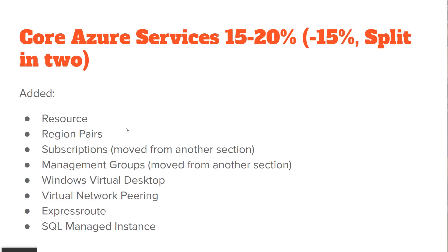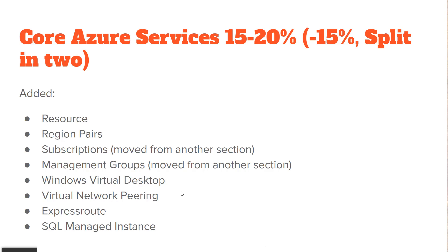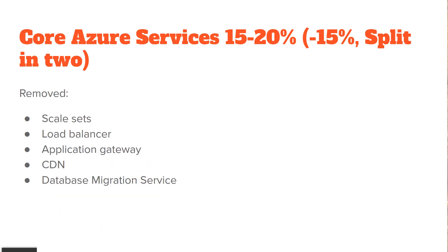For the second section, called core Azure services, it's actually been split into two. It used to be worth 30 to 35% of the exam score. Now it's broken into two sections. The first section is half of it — 15 to 20%. They're talking about the definition of an Azure resource, region pairs, subscriptions and management groups (which was moved up from another section), Windows Virtual Desktop, virtual network peering, Microsoft Express Route, and SQL mentioned as a database type. That's quite a bit added to this section, even though the section is half of what it used to be.